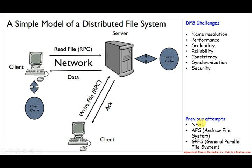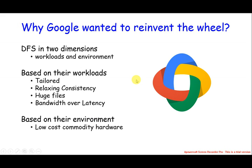It started with NFS, and then there were interesting distributed file system concepts like AFS (Andrew File System) and GPFS, which was a more scalable general parallel file system. Back in 2003, when various distributed file system concepts existed, Google published this paper describing their approach. The key question is: what is Google's competitive advantage and how does their approach differ from distributed file system architectures available at that time?